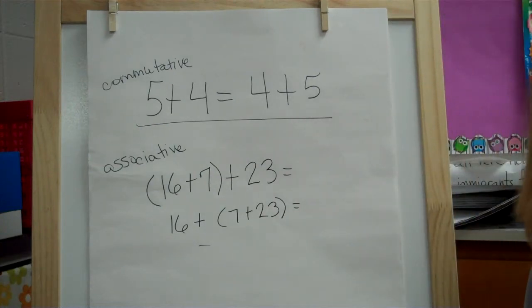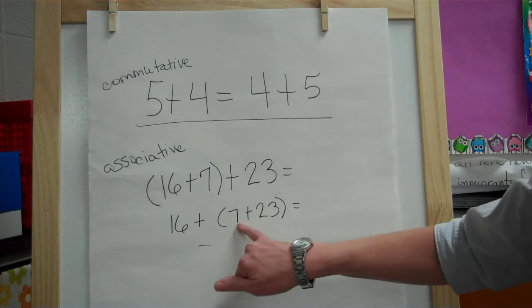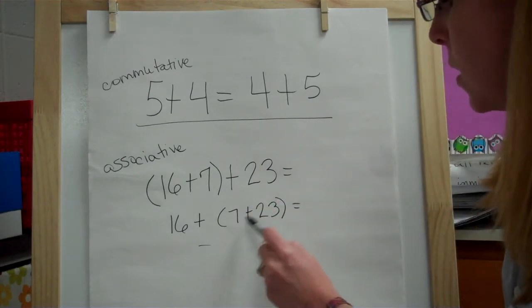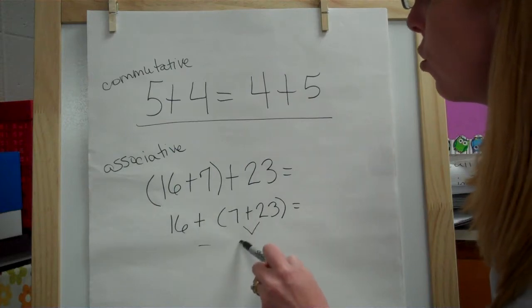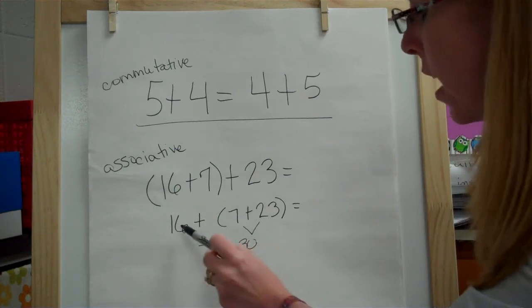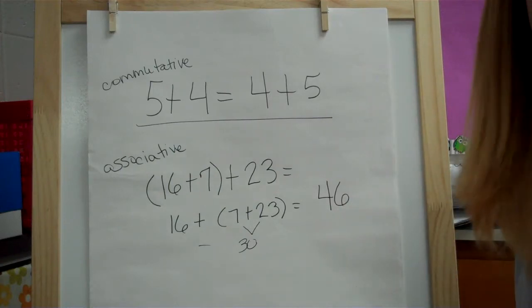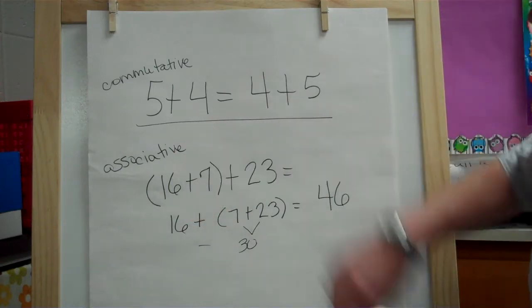Now I'm going to give you a minute to look at that and see why we grouped them that way. So 23 and 7, we know that 3 and 7 is a fast 10. So that would be 10 and that would make that 30. And so then I could add 30 and 16 and that gives me 46 and I can do that in my head. So that's the associative.